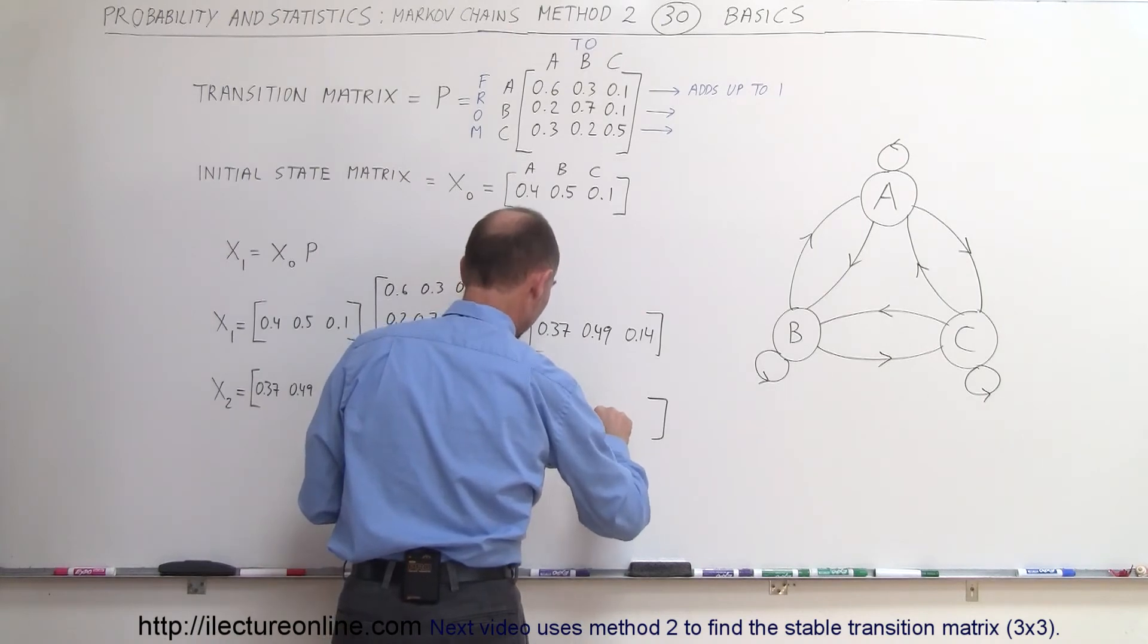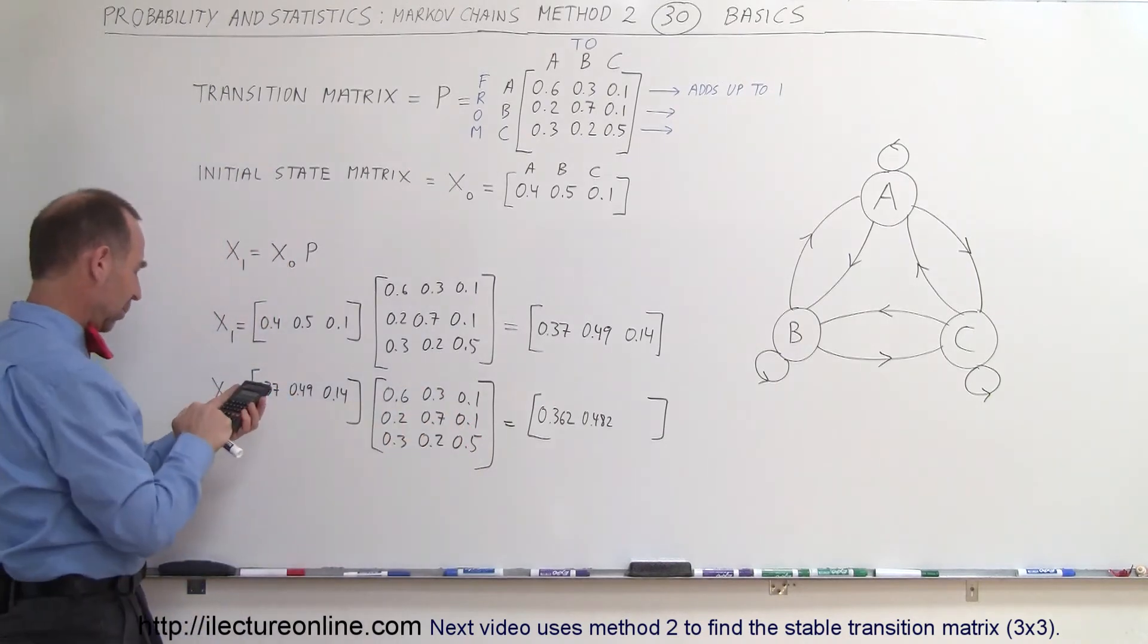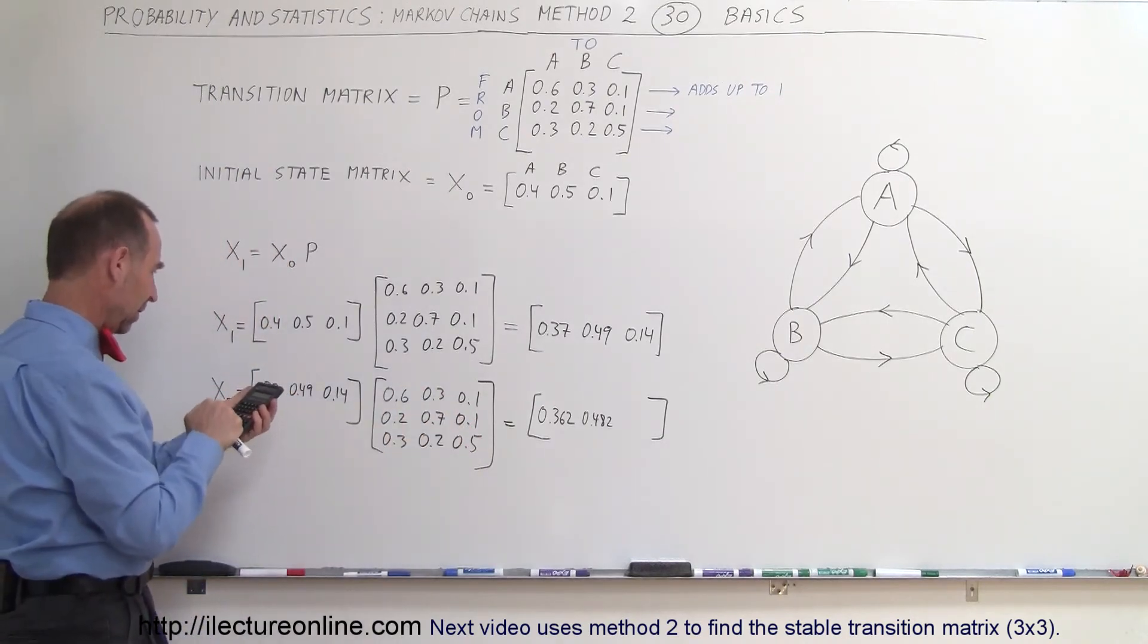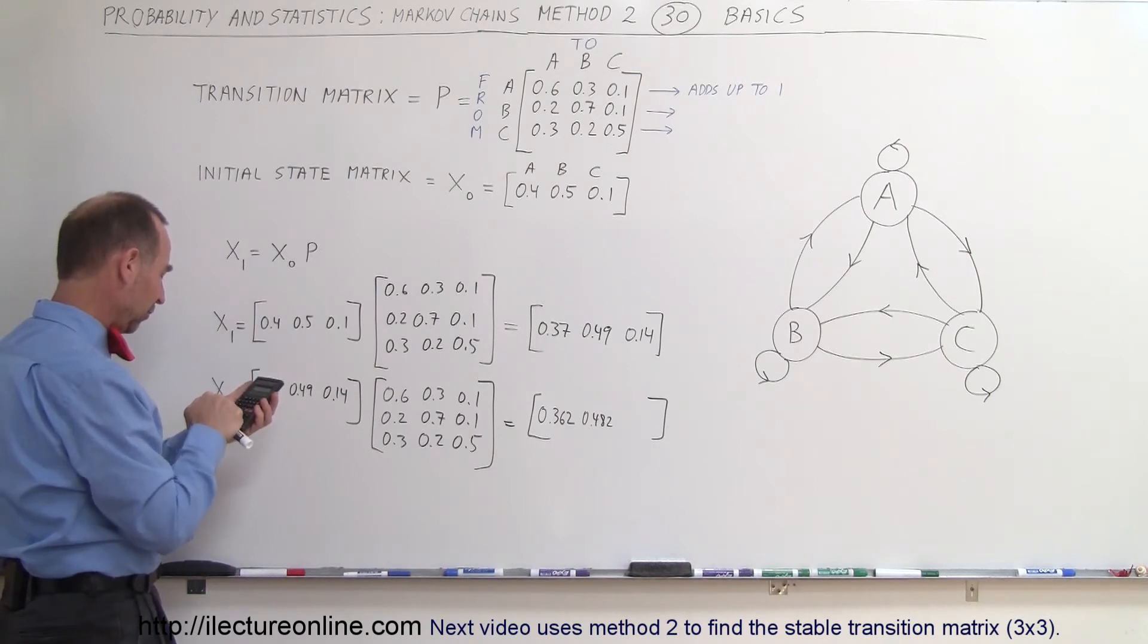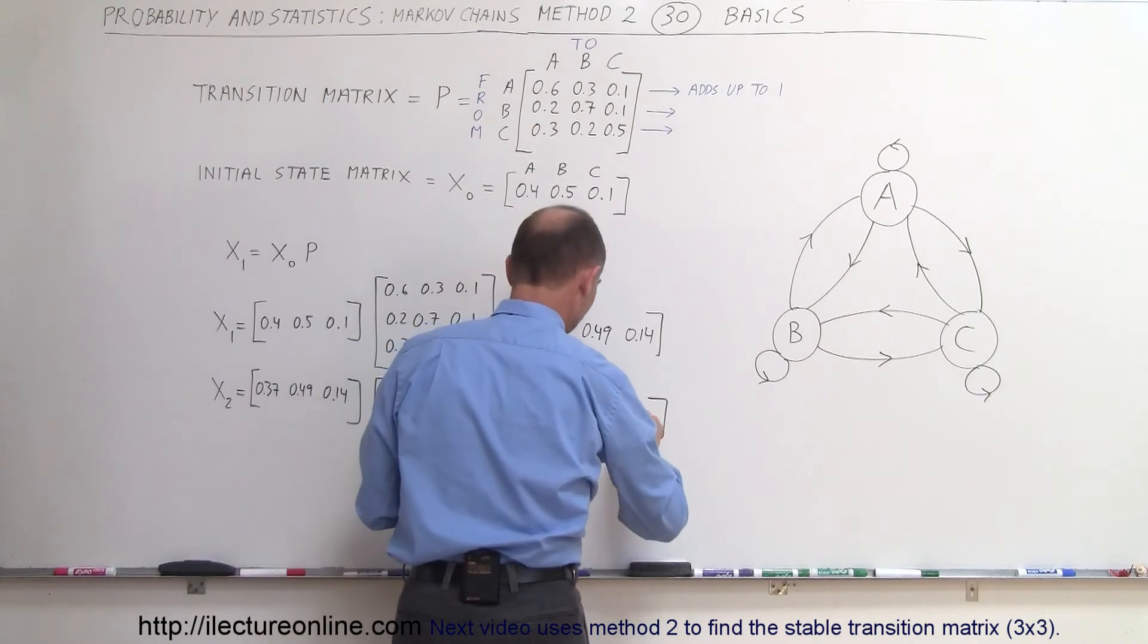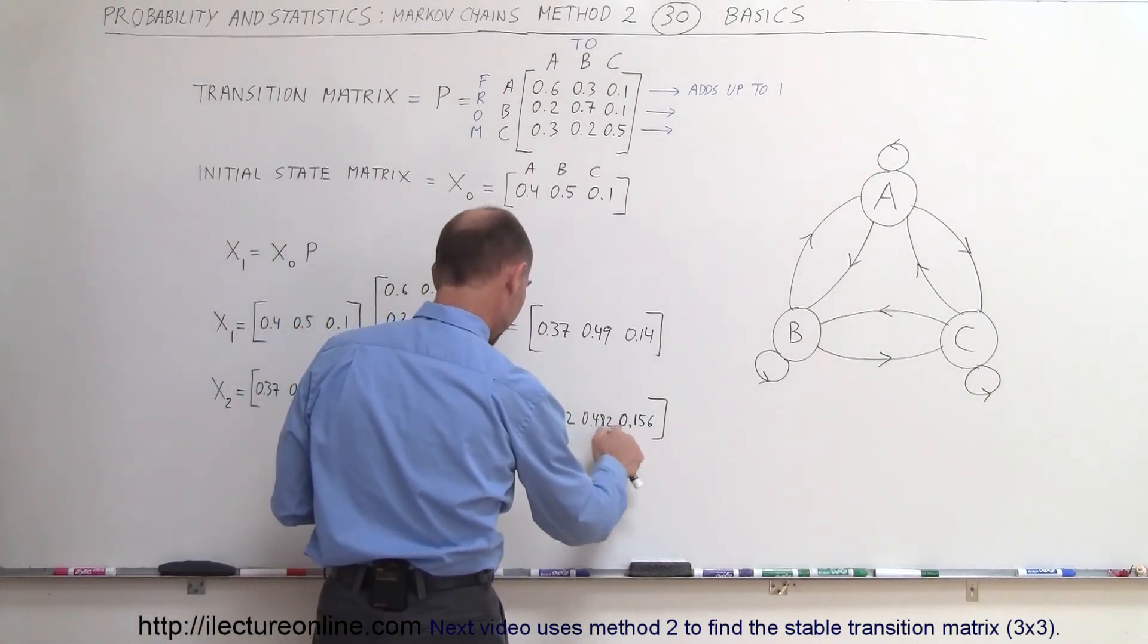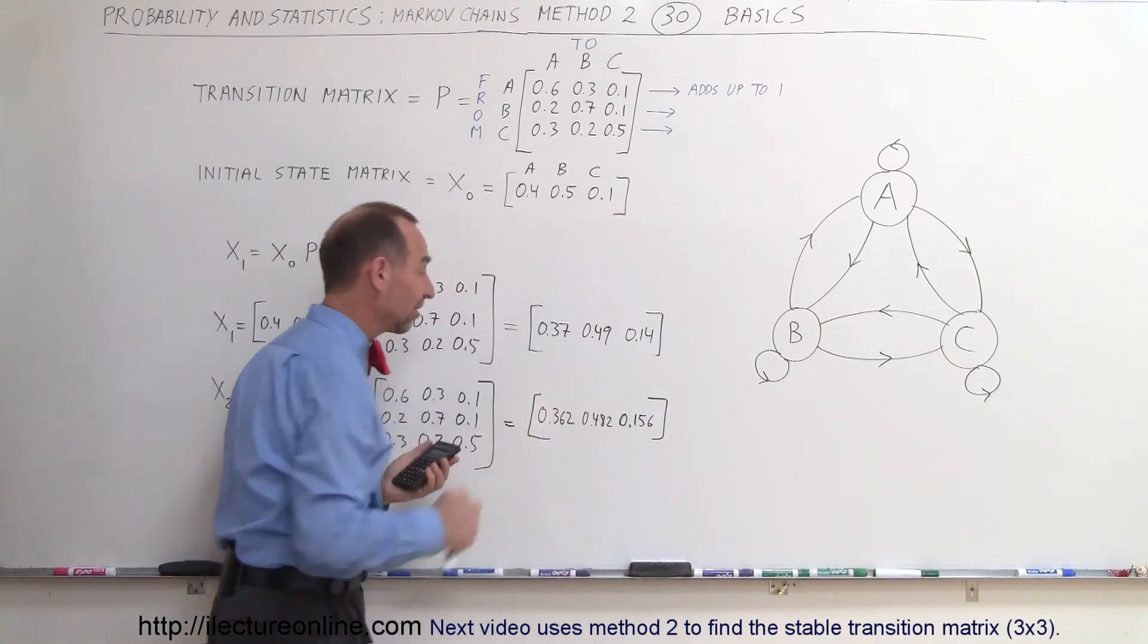And finally I multiply this row times this column I get 0.37 times 0.1 plus 0.49 times 0.1 plus 0.14 times 0.5 equals I get 0.156 0.156 and again just to make sure we did this correctly it better add up to one so that would okay that checks 13 that checks 3 7 that checks so that's exactly equal to one.